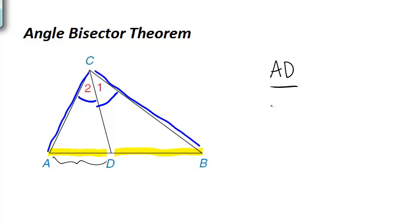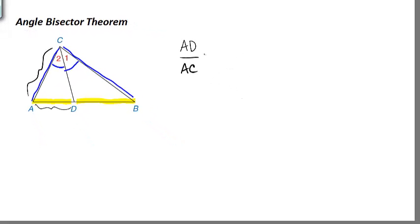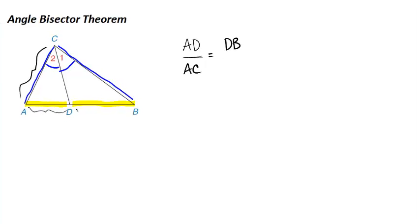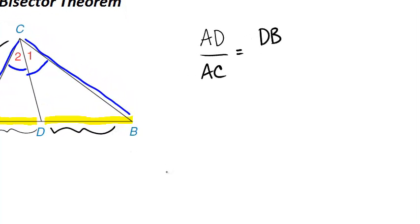over AC, which is the side that it matches up with here on the left, is in the same ratio as if we were to look at DB, which is the other side of AB that gets split up, over the side CB,